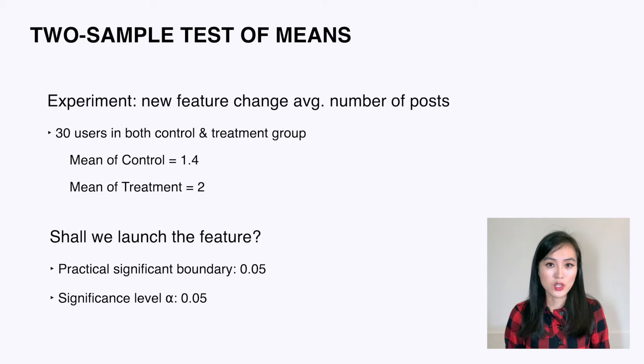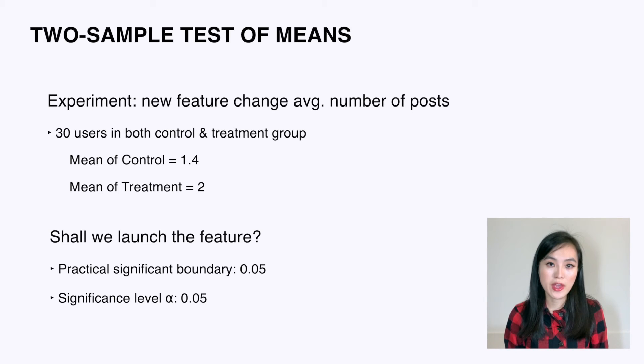Assume the variances are similar in the two groups. What conclusion can you draw from this experiment? Should we launch the feature to all users? The practical significance boundary is 0.05 and we choose an alpha of 0.05.